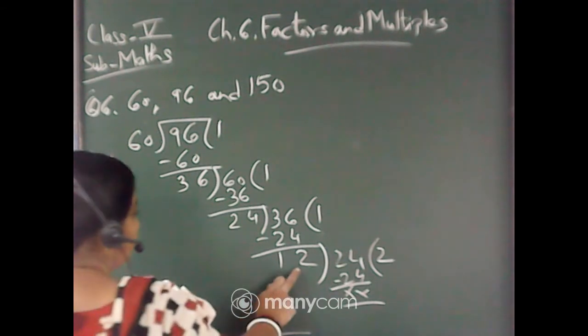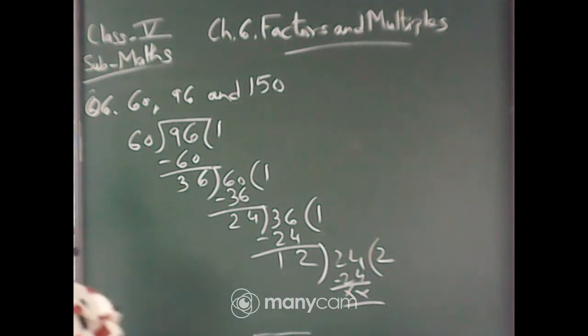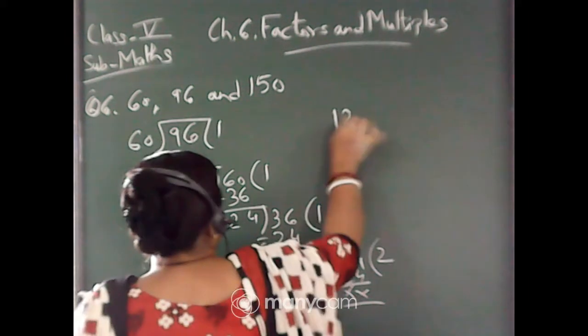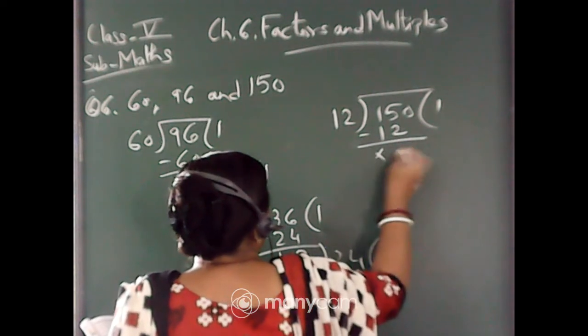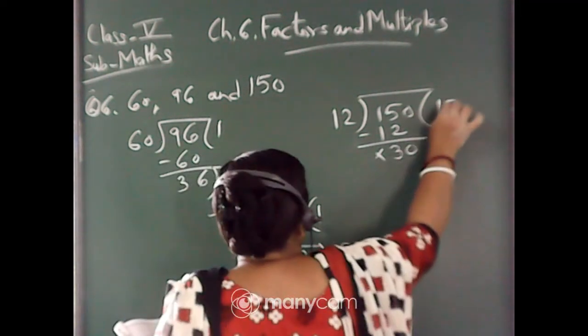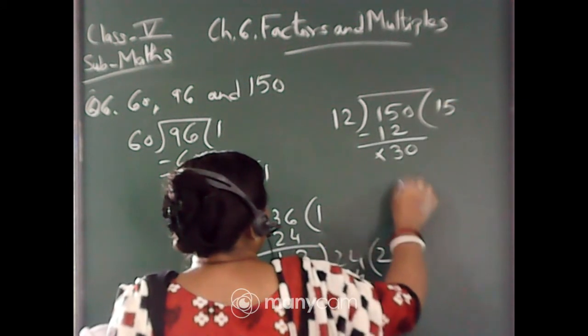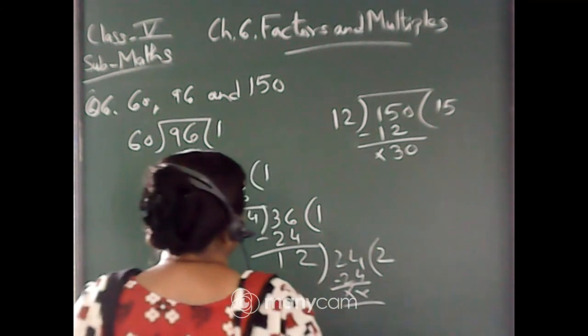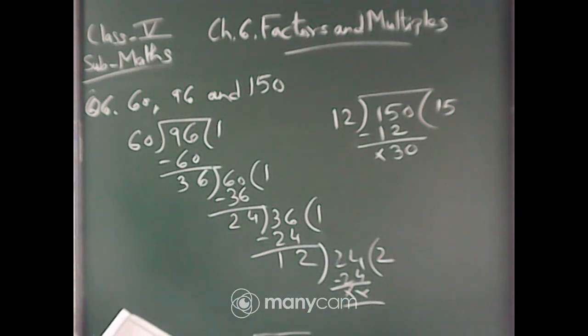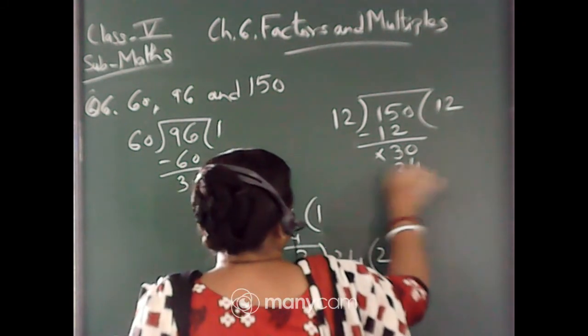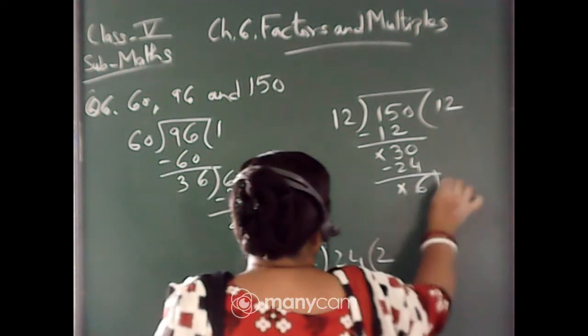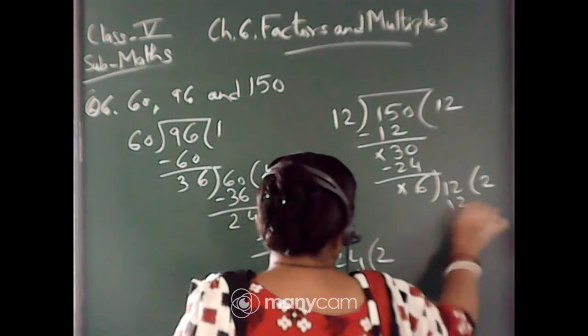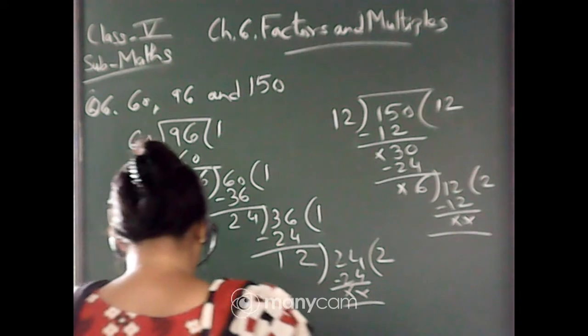So you will divide this 150 by 12. So 12 and 150. 1 times 12, 3 times 12, 5 times 12, no it will not be. 25, 12 times 24. So this 12 will come down, 6 times 12. That means the HCF is 6, this one.